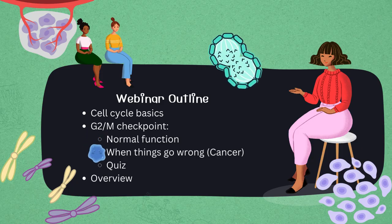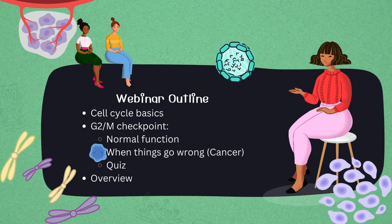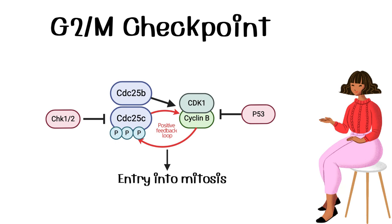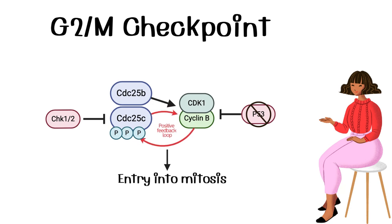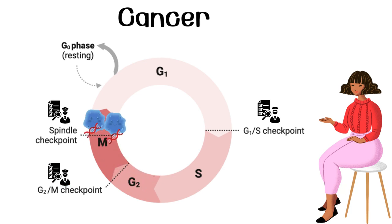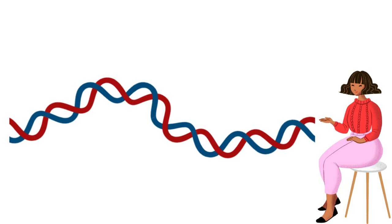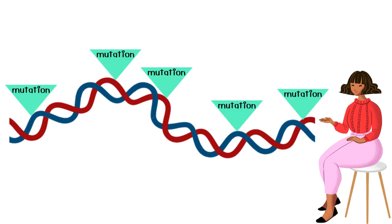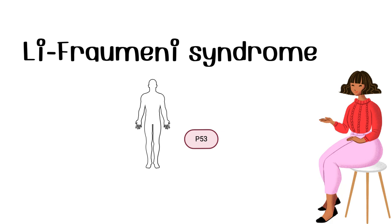You saw what happens in a normal healthy cell, but you can imagine how many things can go wrong in cancer. For example, if P53 was broken due to a mutation, the activity of the MPF wouldn't be inhibited and the cell may still proceed into mitosis, causing cell proliferation despite the DNA damage. Such a mutation may allow the accumulation of other mutations and lead to cancer. This is what happens in people with Li-Fraumeni syndrome, a type of heritable cancer predisposition caused by mutations in P53.